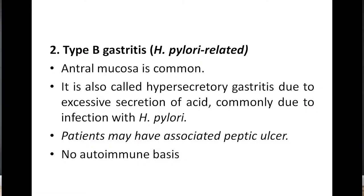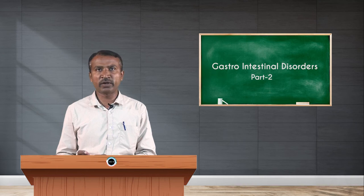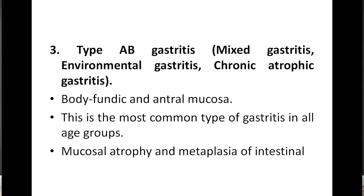Type B gastritis is H. pylori-related (Helicobacter pylori-related) gastritis, mainly seen in the antral mucosa — the commonest area for this type. It is also called hypersecretory gastritis due to excessive acid secretion commonly caused by H. pylori infection. Patients may have associated peptic ulcers, and there is no autoimmune basis.